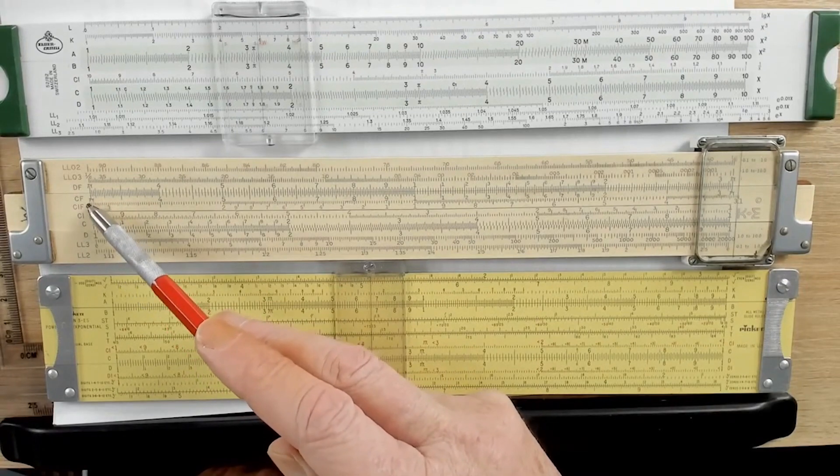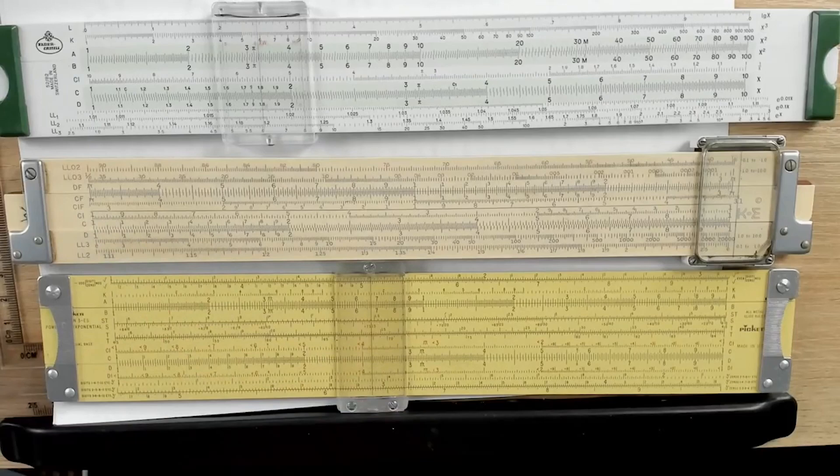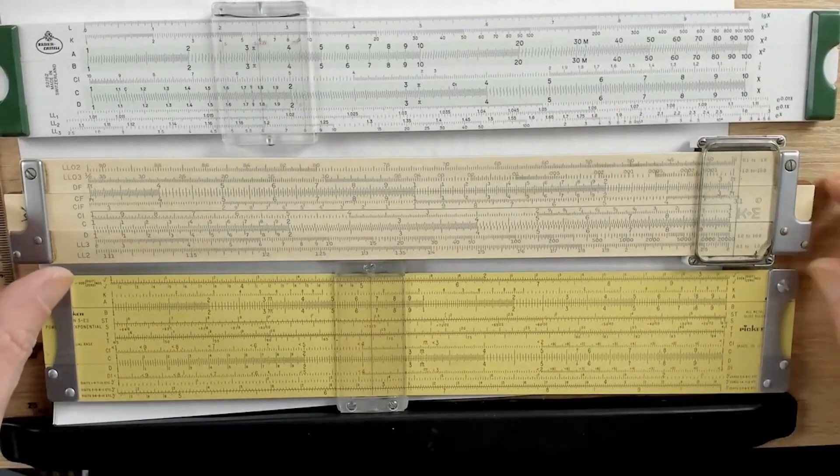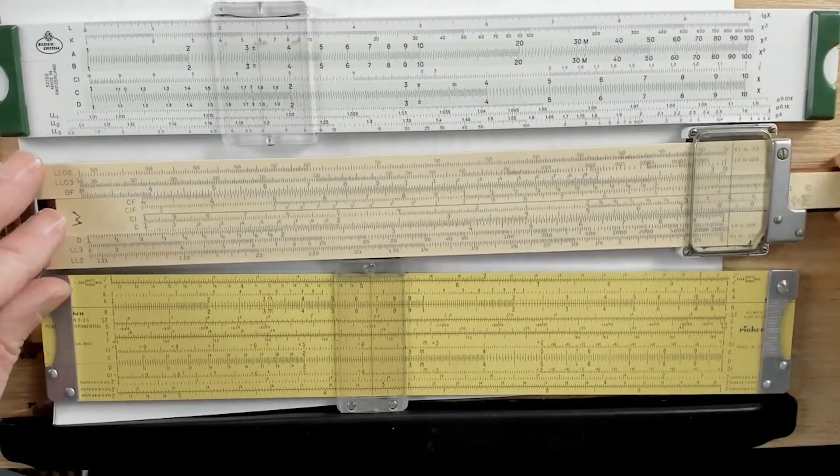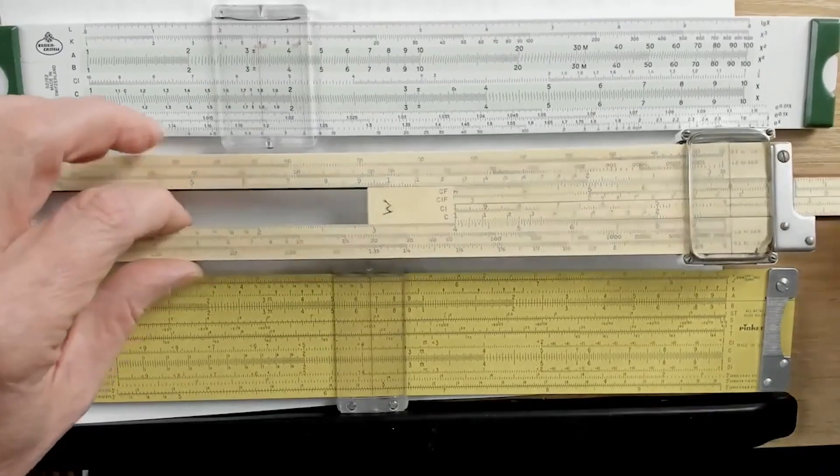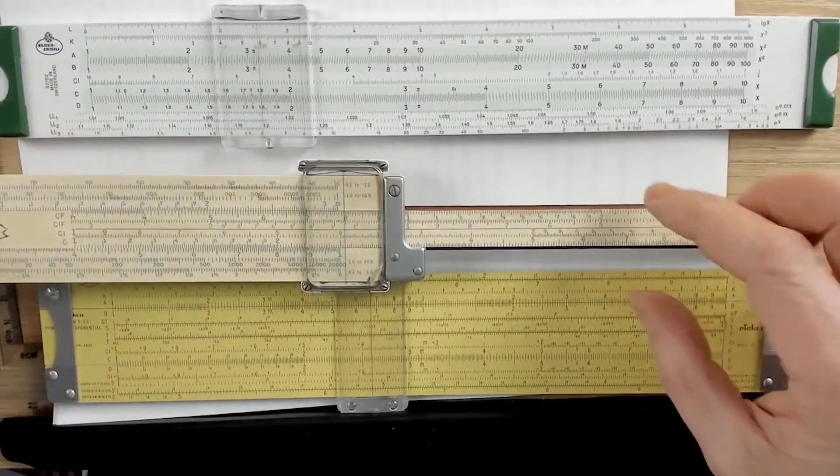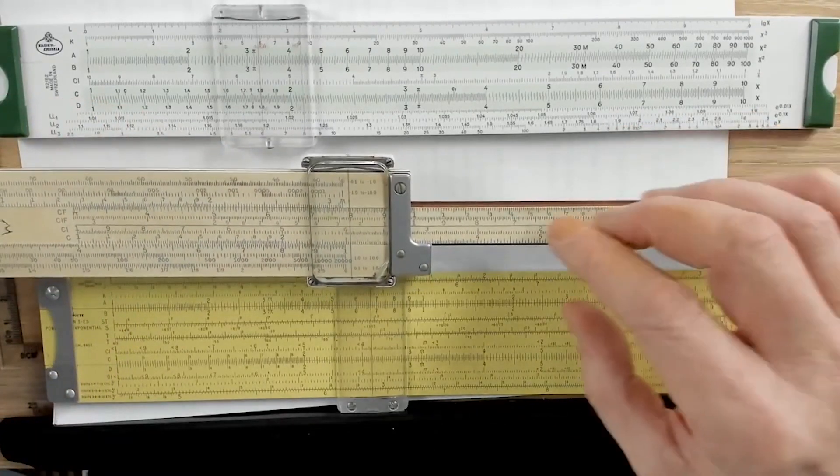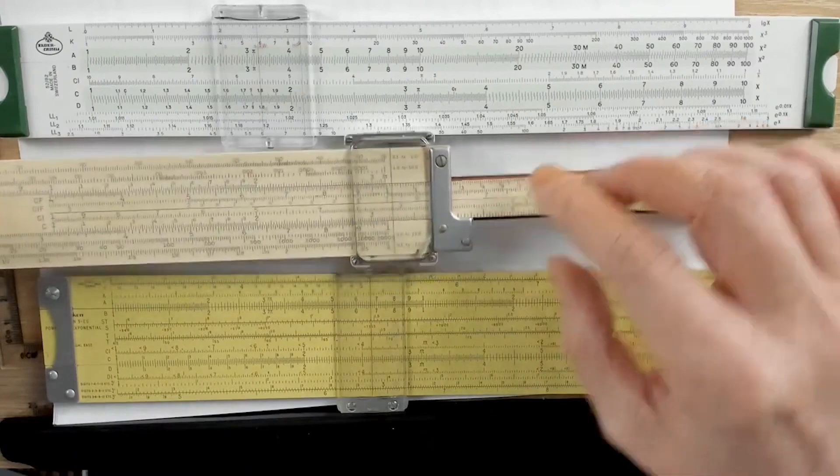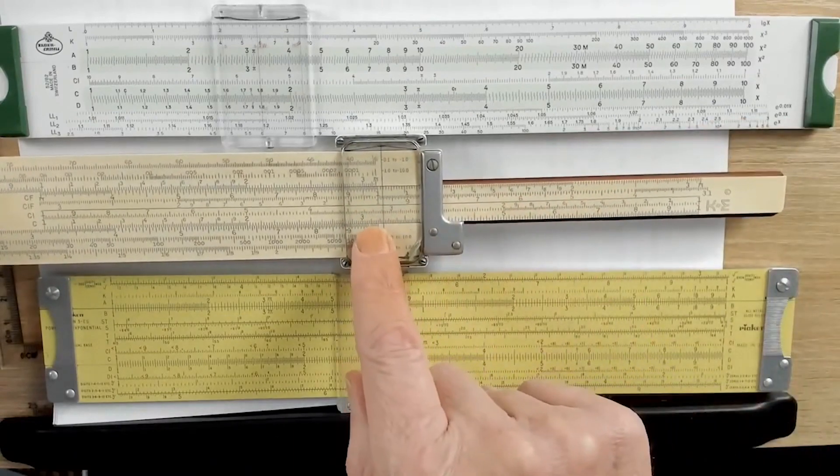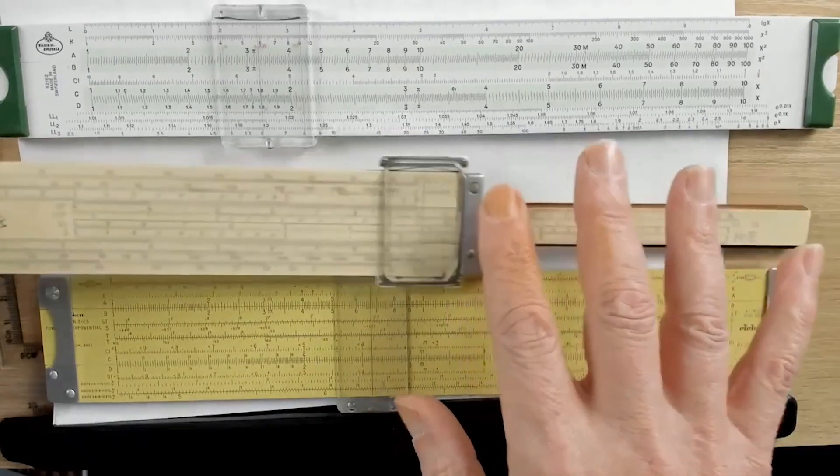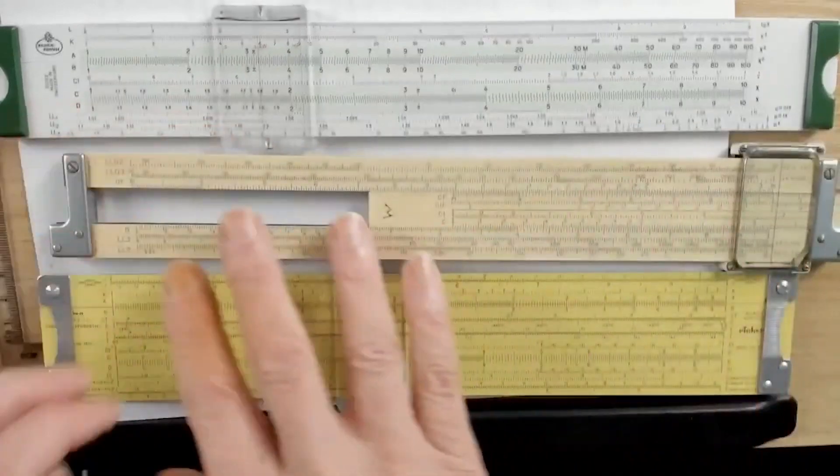Now, up here you have something interesting. You have a CF and a DF scale. Now, a few minutes ago we did something where we multiplied 4 by 6, and we ran into a problem because if we bring the index out here to 4 and try and read the 6, it's way the heck out here. Well, what would happen if instead we cut this scale off right here at pi, 3.14, and then we took this half of the scale and we moved it over to here?